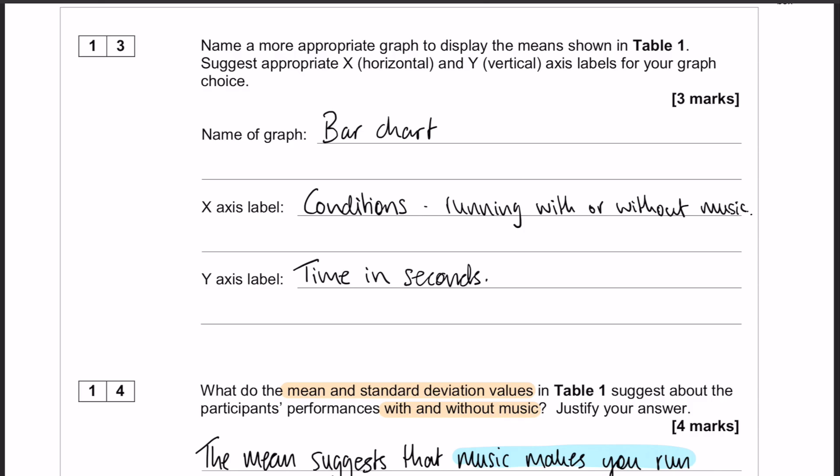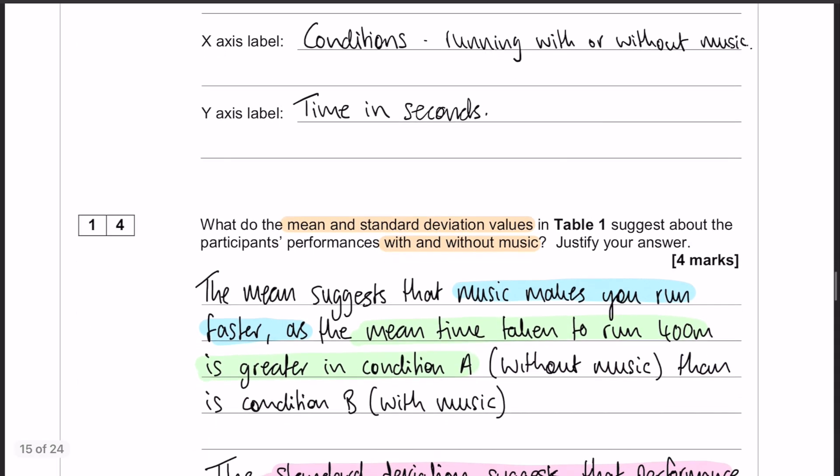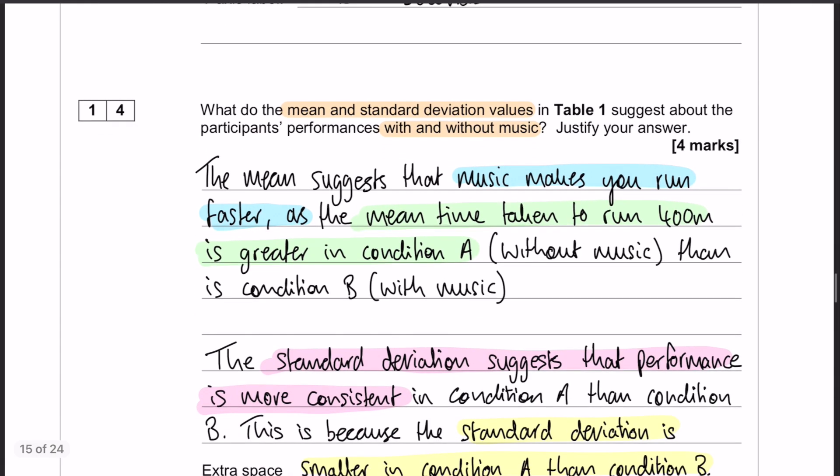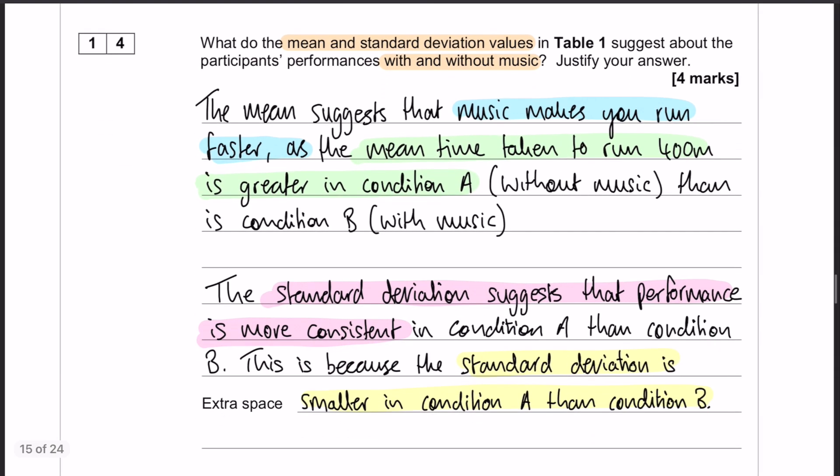And then question number 14: what do the mean and the standard deviation values suggest about participant performance? So here is the answer for that. The mean suggests that music makes you run faster - there's one mark - and my justification for that is that the mean time taken to run 400 meters is greater in condition A, without music, than it is in condition B, with music. If you want to, you can use some data from the table there to actually back up with figures, but even if you don't, that's still two marks.